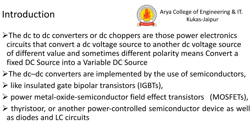Introduction. The DC to DC converter, or DC chopper, is a power electronic circuit that converts a DC voltage source to another DC voltage at a different value, and sometimes a different polarity — meaning it converts a fixed DC source into a variable DC source.